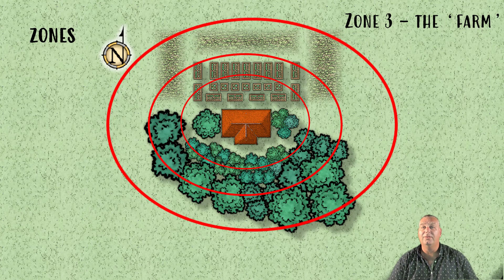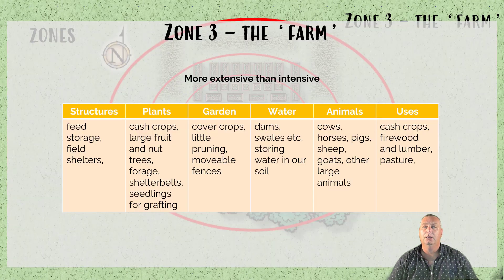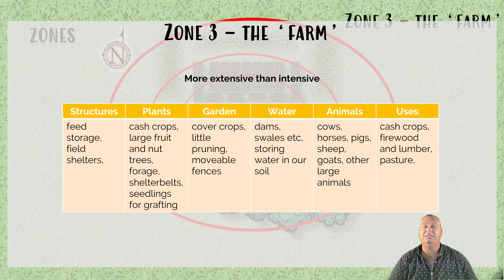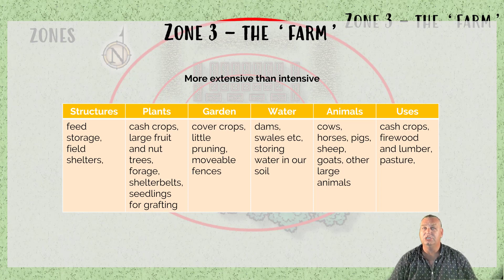In zone 3, called the farm, it's further away again — anywhere between once a month and once every six months. In that space we're looking at feed storage, fields and shelters, potentially cash crops, large fruit and nut trees, forage, shelter belts, and seedlings for grafting. In the garden it could be cover crops and minimal pruning, with mobile fencing rather than fixed fencing. For water, dams and swales — storing water into the soil. Animals could include cows, horses, pigs, sheep, and goats. Uses include cash crops, firewood, lumber, and pasture — more extensive rather than intensive.